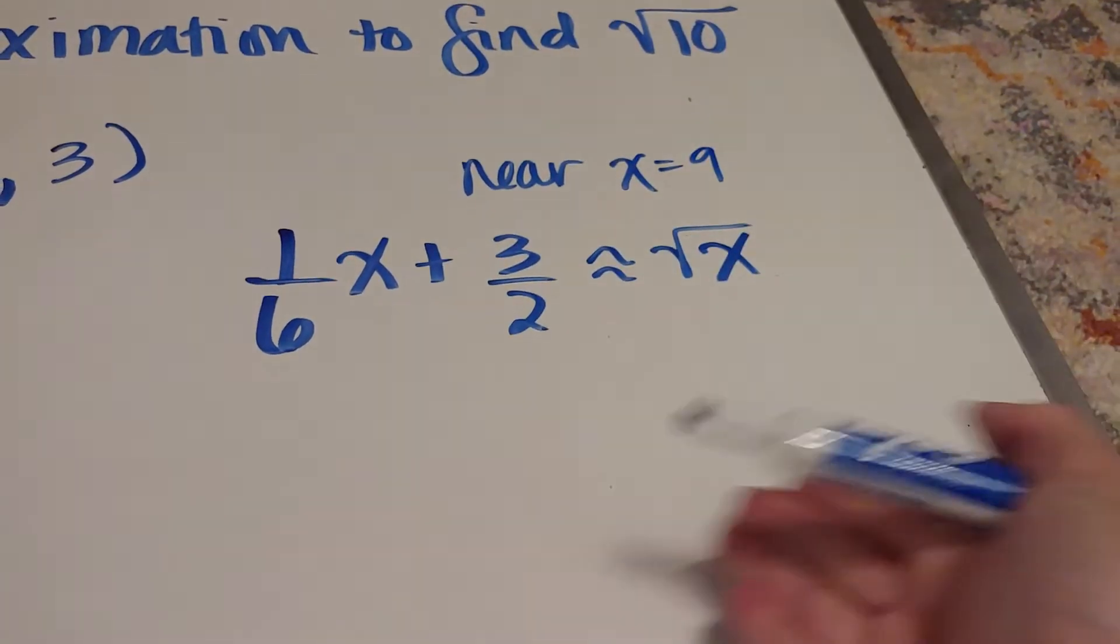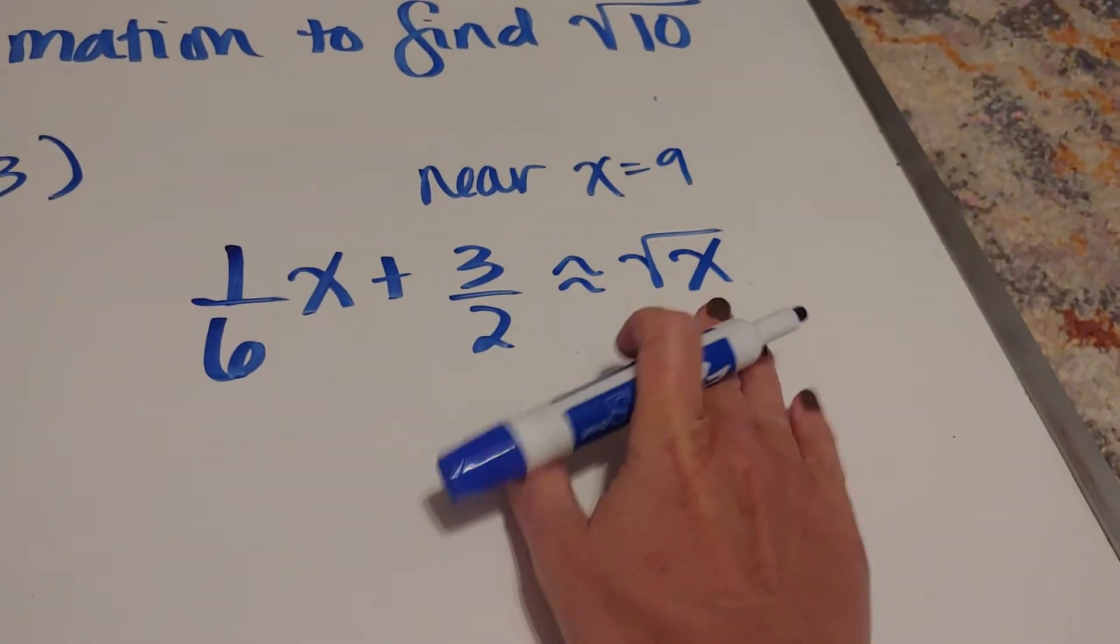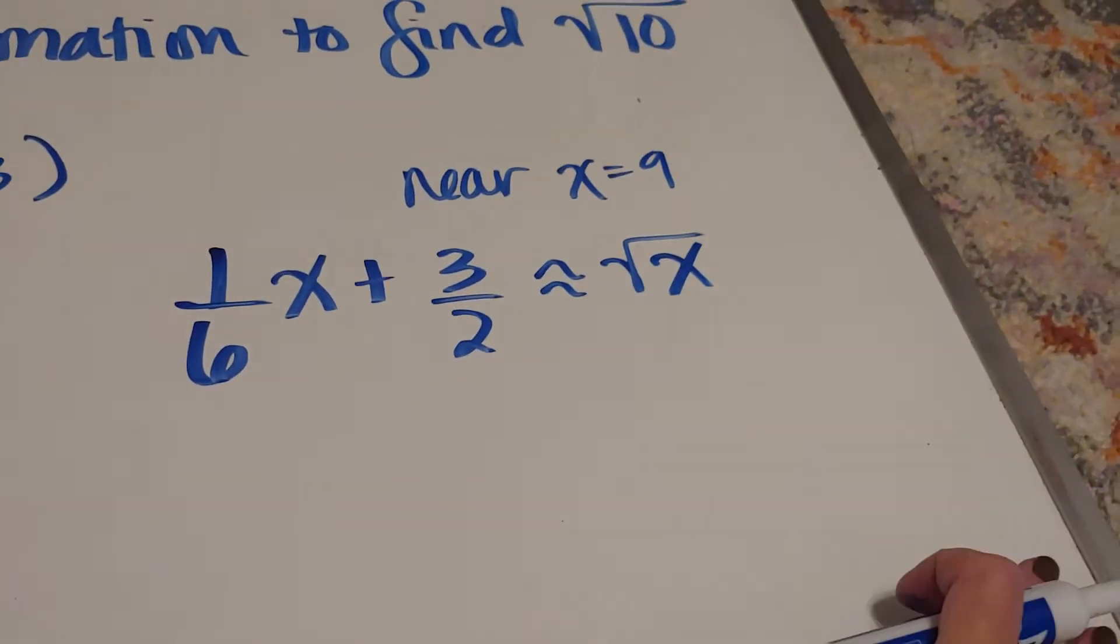So to me, this is like a user's guide. If I hand it to somebody, they can see that this line is going to approximate this function near 9.